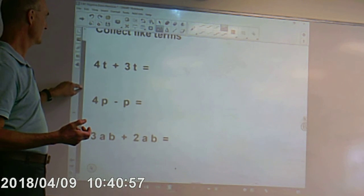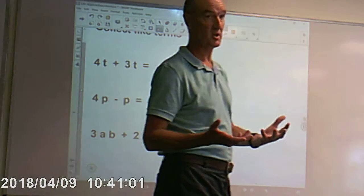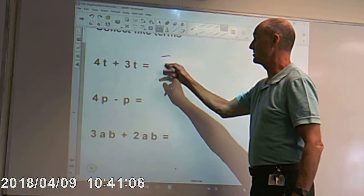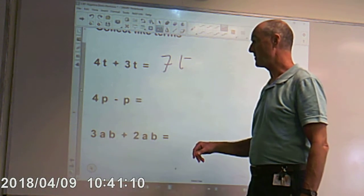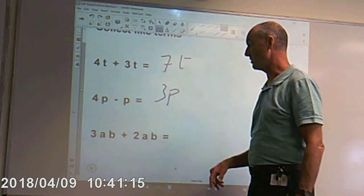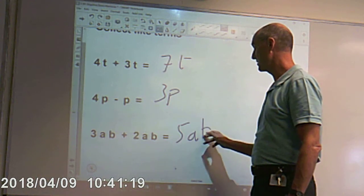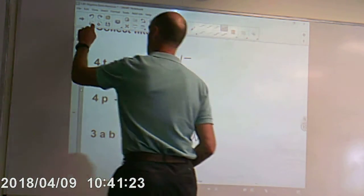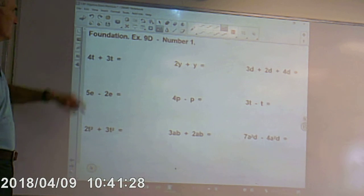Some examples of collecting like terms. 4t plus 3t — t's are the same, so that's 7t if you add them together. 4p take away a p leaves you with 3p. 3 lots of ab plus 2 lots of ab gives 5 lots of ab altogether. They must be like terms once you combine.